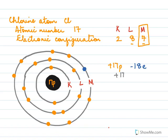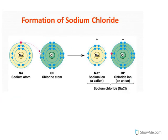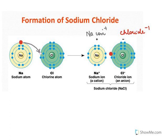The net charge on chlorine after accepting one electron will be: plus 17 from the protons, minus 18 from the electrons, giving minus 1. So after chlorine accepts one electron it becomes a chloride ion with a minus one charge. When the sodium atom comes close to a chlorine atom, the valence electron of sodium is lost and chlorine readily accepts this electron, forming the sodium ion Na⁺ and the chloride ion Cl⁻.